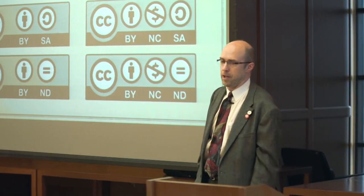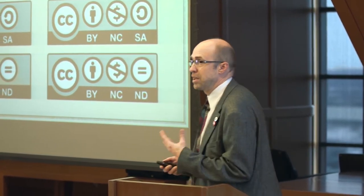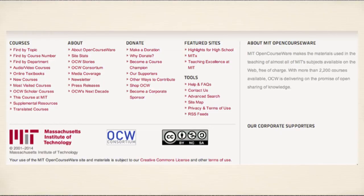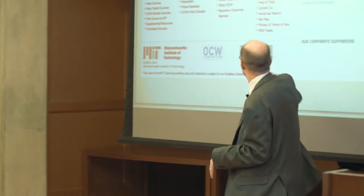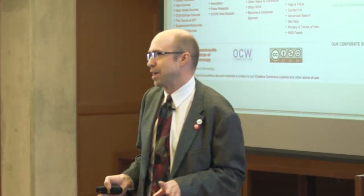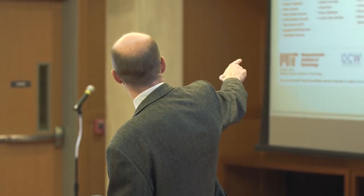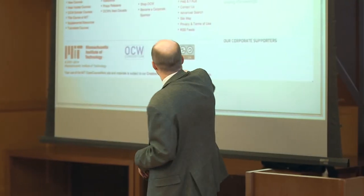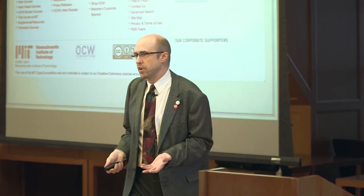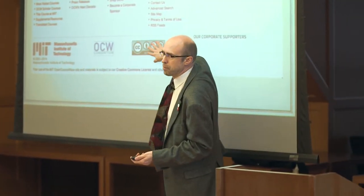These licenses are being used all over the internet already. Here's MIT's OpenCourseWare, which has been around for well over a decade — the president of MIT said they're going to put all their content on the web for free. When they first did that, they got a lot of emails saying, 'Can I use this? Can I copy that? Can I put that in my course site?' So they put a Creative Commons license on it — BY NC SA — which means: attribute MIT, don't sell it, and if you make something out of it you need to use this license on whatever you make. Now you know the terms upfront.